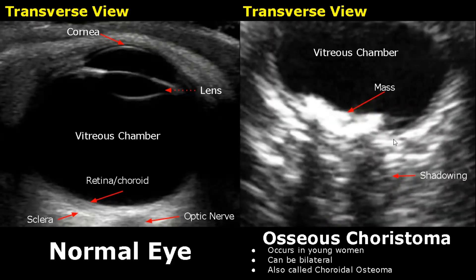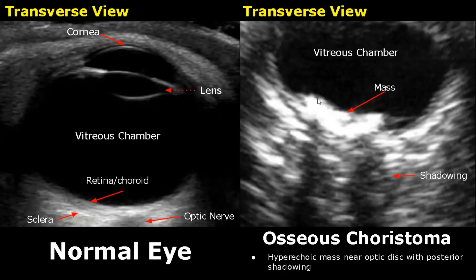Osseous choristoma is a tumor that occurs in young women and can be bilateral — it is also called choroidal osteoma. A hyperechoic mass near the optic disc is seen, and the optic disc is the head of the optic nerve. This hyperechoic mass has posterior acoustic shadowing.